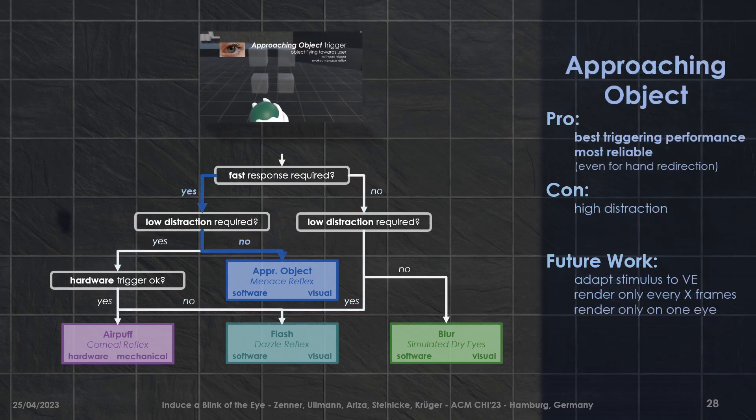In use cases where fast responses are required, but distraction is not a primary concern, our findings show that the approaching object trigger is most suitable. While distracting, it performed best in terms of reliability and triggering performance. Future work should investigate if distraction can be reduced, for example, by tailoring the stimulus to the logic and aesthetics of the virtual environment.